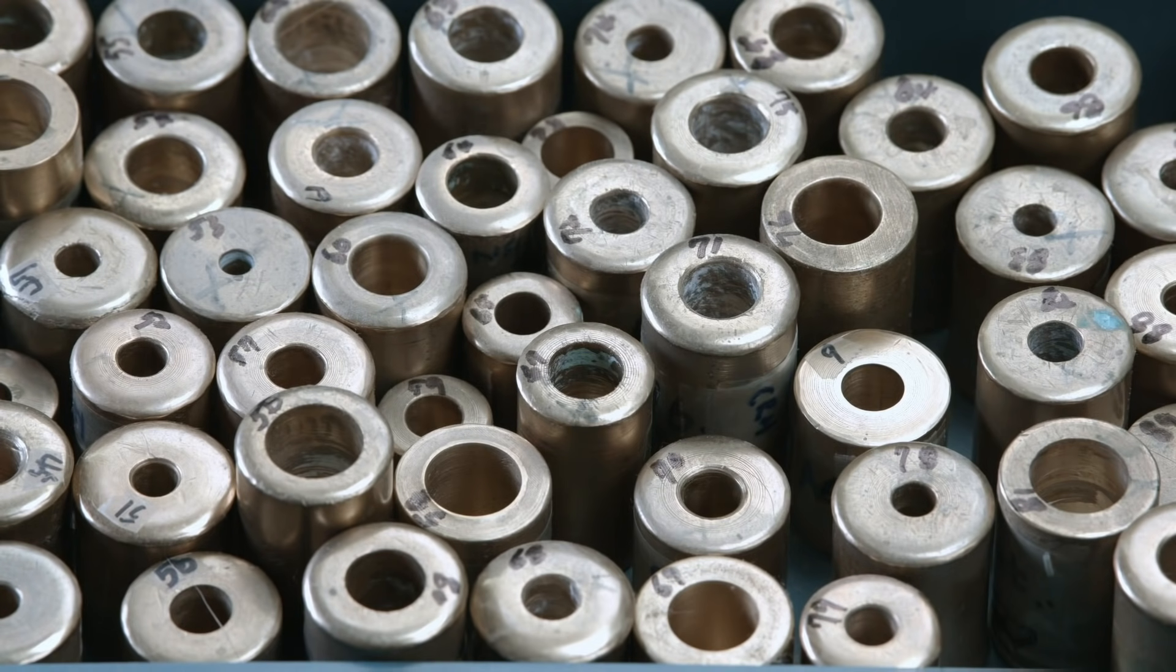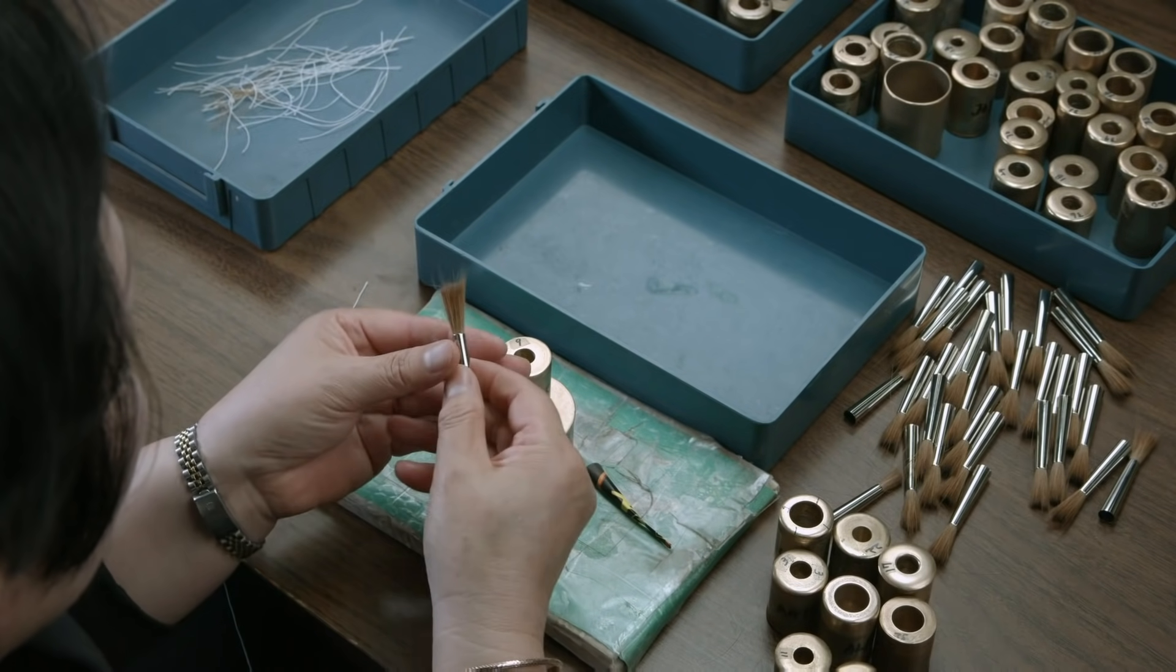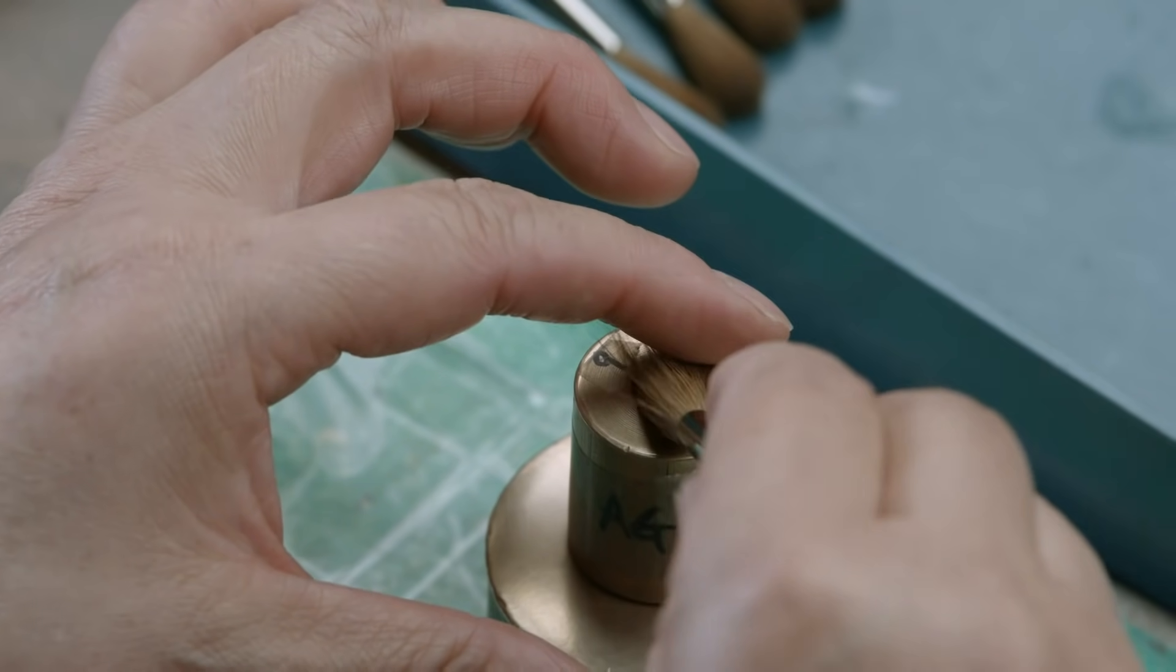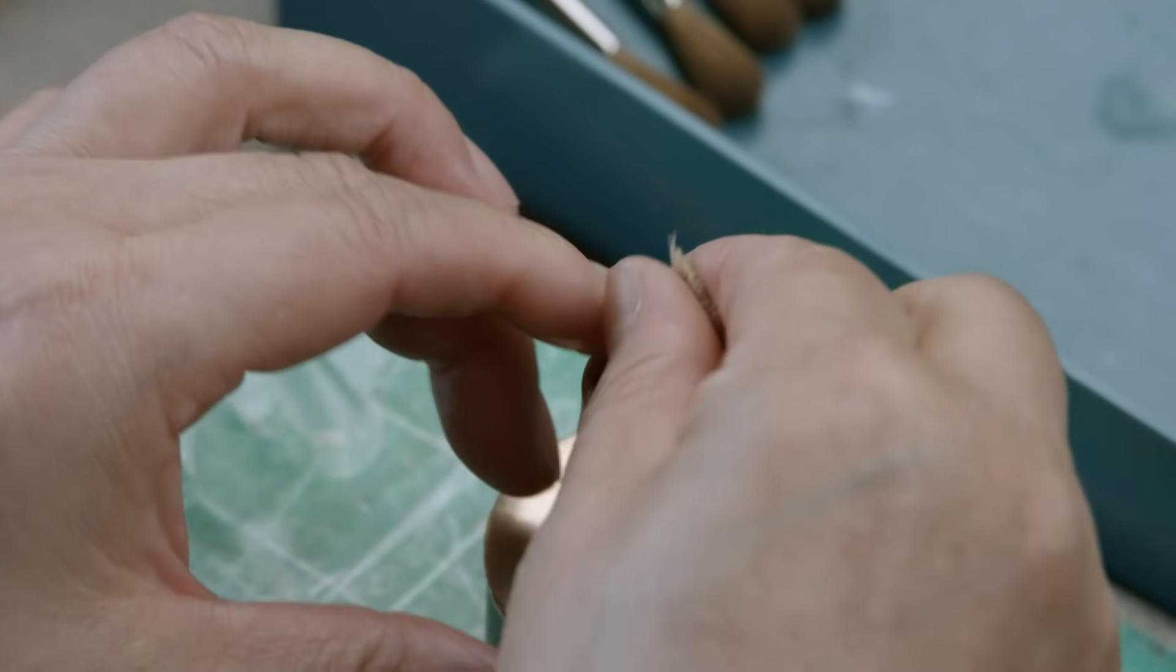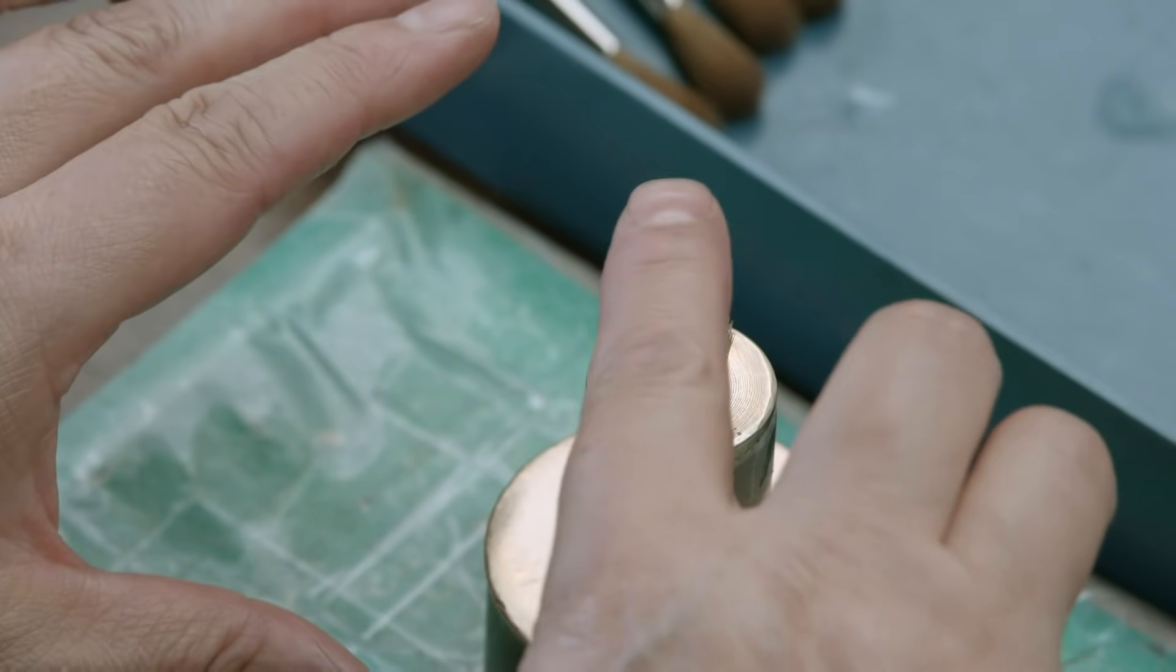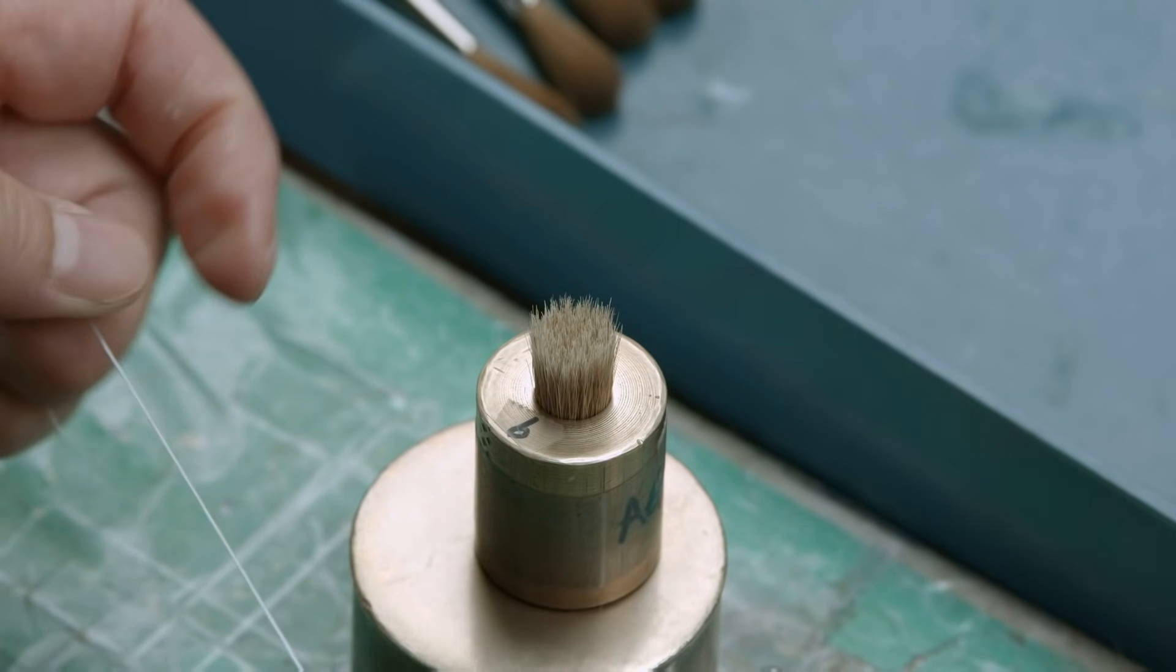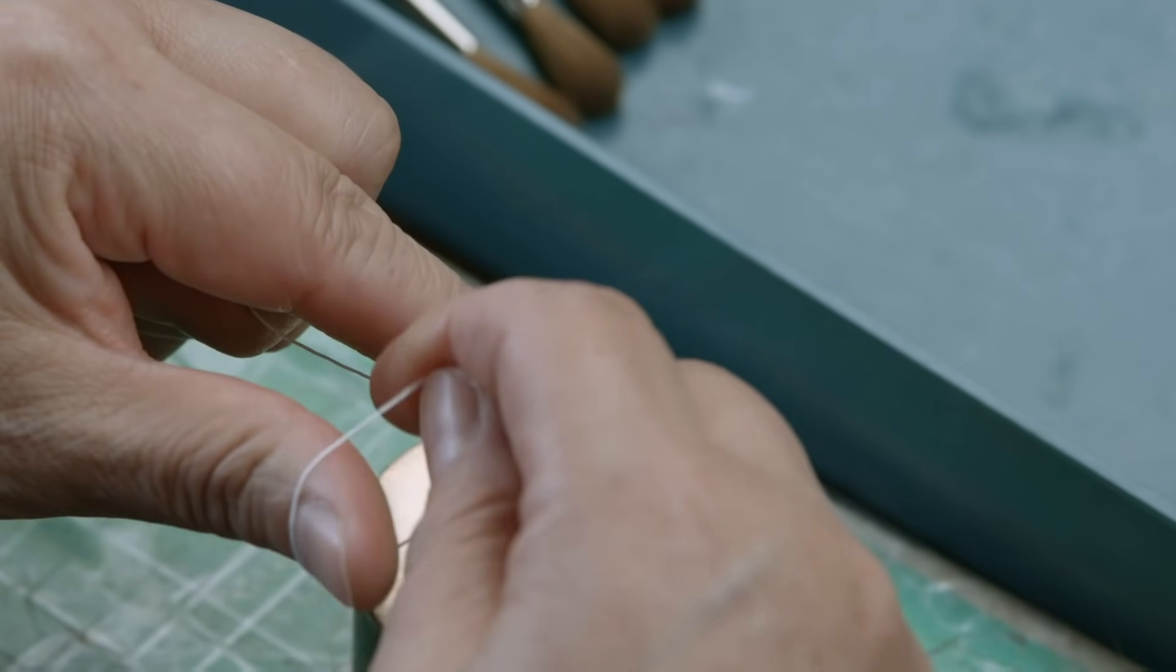Then, taking a brass mold for the size of brush that's being made, the hairs are inserted all the way into its cavity. The hairs' roots are then tied together with string.